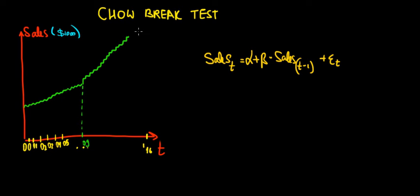Let's have a look at the Chow break test in this video. Suppose we still have our regression as in the previous video, where we regress sales on the lagged value of sales. So how does an increase in sales in the previous period affect sales in the current period?